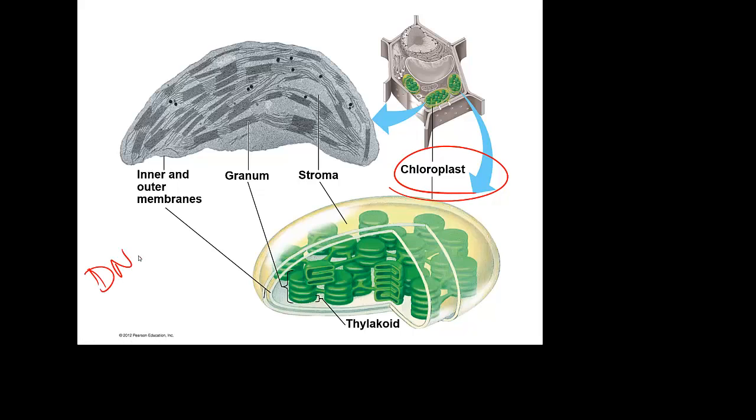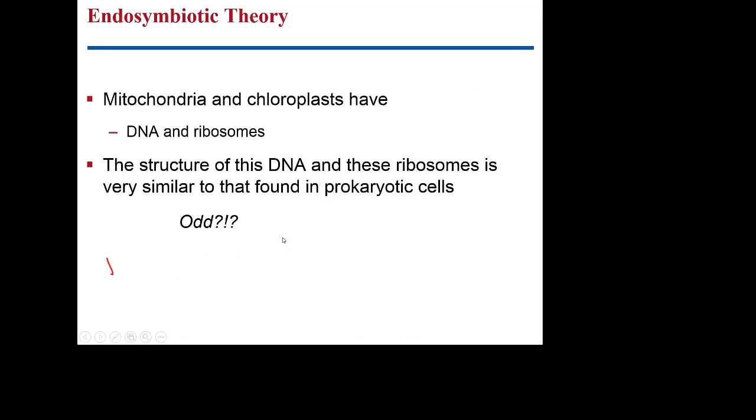Chloroplasts have their own DNA, and again, they're going to have their own ribosomes. And they're going to self-replicate. So you see the similarities between mitochondria and chloroplasts.